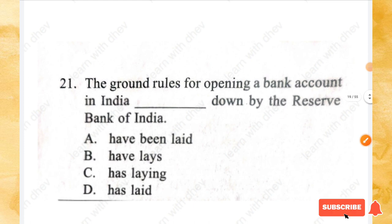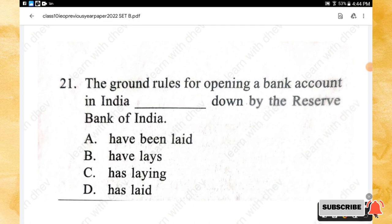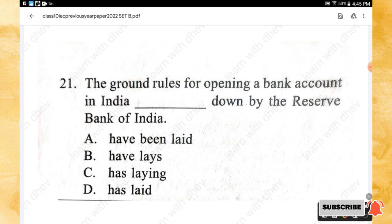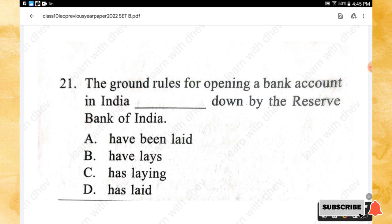Question 21: The ground rules for opening a bank account in India _____ down by the Reserve Bank of India. Options: have been laid, have lays, have a laying, has laid. The right answer is option A — have been laid.